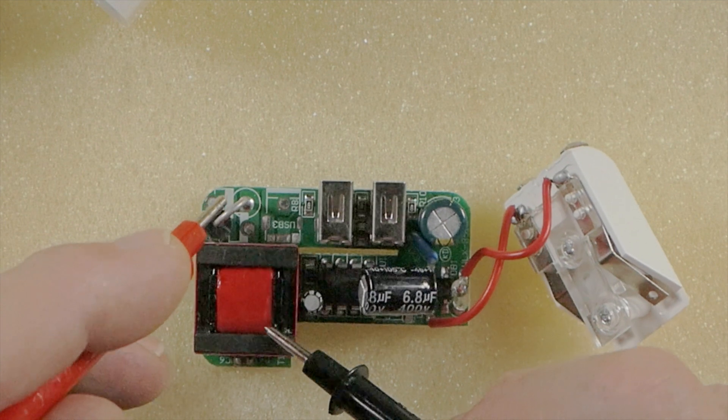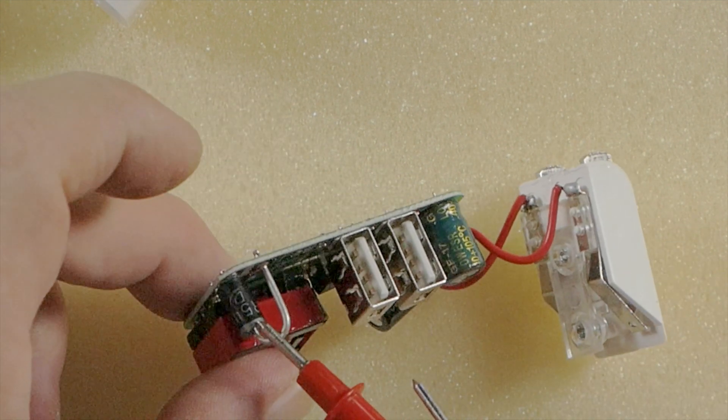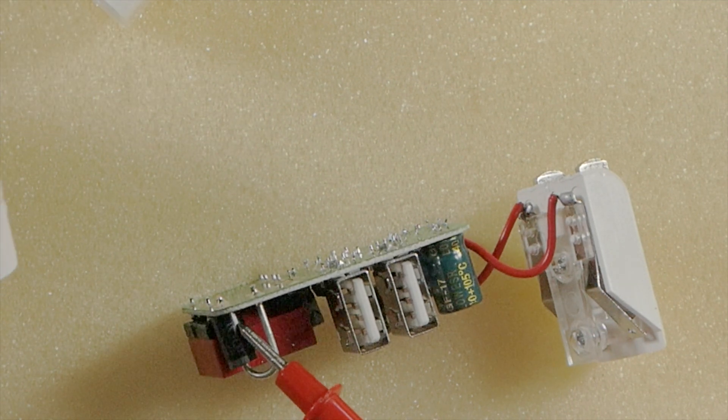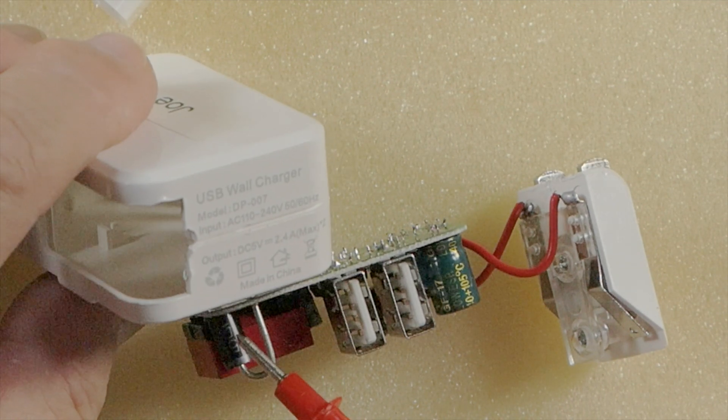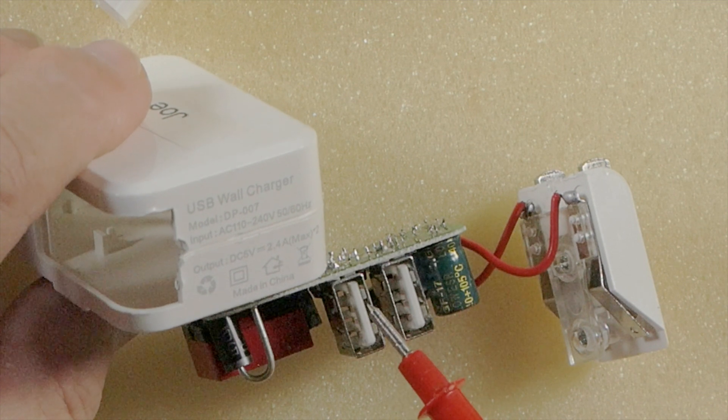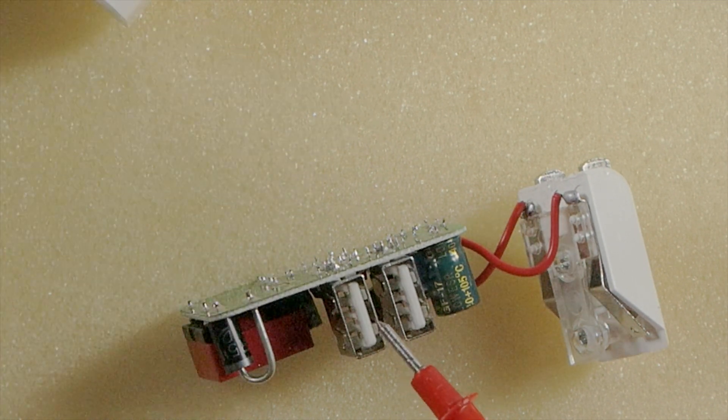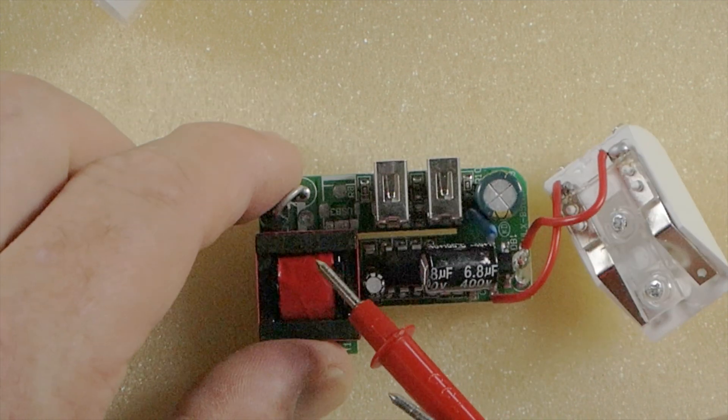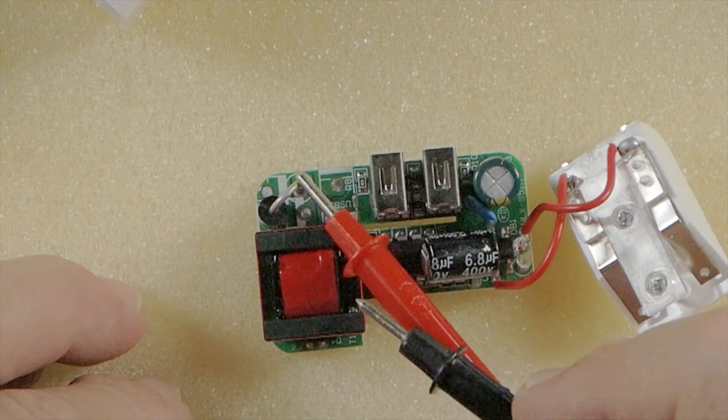This diode is pretty big and that's because the charging block is capable of putting out 2.4 amps of current on both connectors simultaneously. So there's a fairly high current charger, that's why you need a big transformer and a big diode.